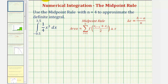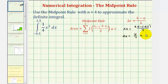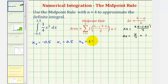Let's begin by determining delta x. Delta x equals b minus a divided by n. Here b is 3.5, a is negative 0.5, and n is four. So delta x is four divided by four, or one. Now that we have delta x, let's find the endpoints of each interval. x sub zero equals a, which is negative 0.5. Adding delta x each time: x sub one is 0.5, x sub two is 1.5, x sub three is 2.5, and x sub four is 3.5. We know we're done because 3.5 equals b.